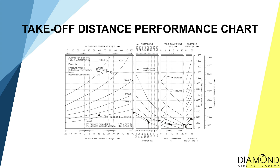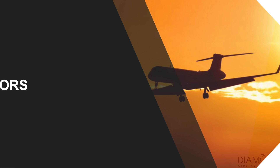The takeoff distance required for an aircraft to take off safely relies on many factors, such as air temperature, air pressure, the aircraft's weight and the wind direction. To find out the exact distance required, we have to refer to the takeoff distance performance chart and calculate the exact runway distance requirement for the aircraft to take off safely, to determine whether the short field takeoff and landing technique is required for the operation.